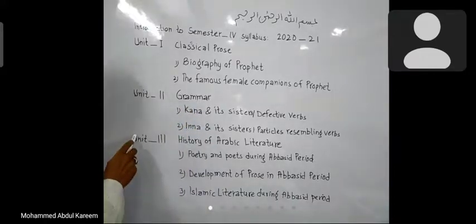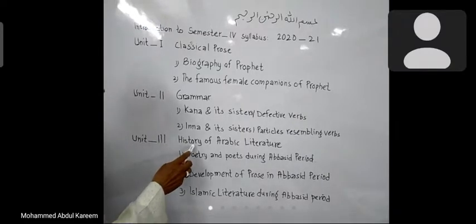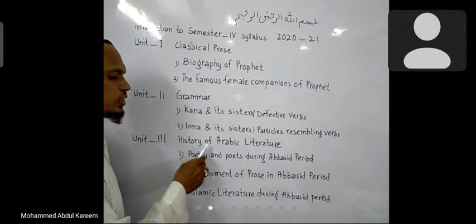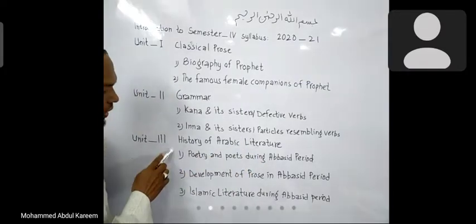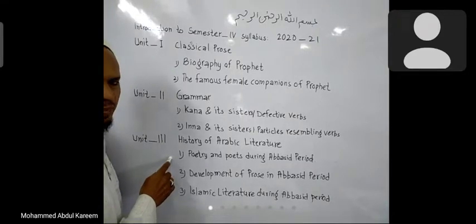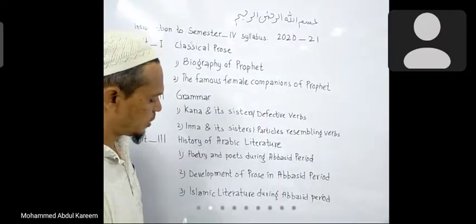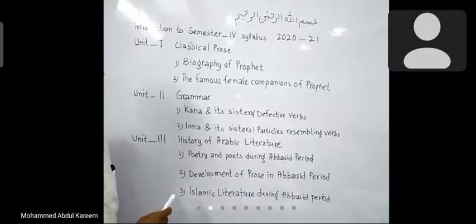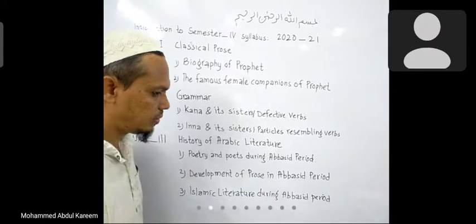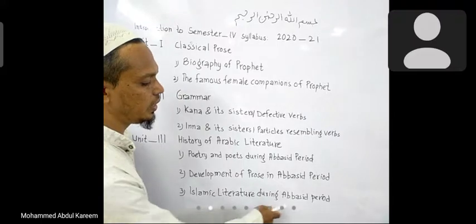Afterwards, we come to unit number 3. Unit 3 belongs to the history of Arabic literature, and in this section we have 3 lessons. Lesson number 1 is poetry and poets during the Abbasid period. Lesson number 2 is the development of prose in the Abbasid period. And lesson number 3 is Islamic literature during the Abbasid period.